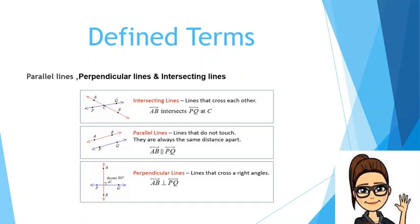Parallel lines are coplanar lines that do not meet — they are always the same distance apart. The red line AB and blue line PQ shown are parallel lines. Next, perpendicular lines are intersecting lines that form right angles. The square symbol indicates a 90-degree angle. So the red line AB is perpendicular to the blue line PQ.